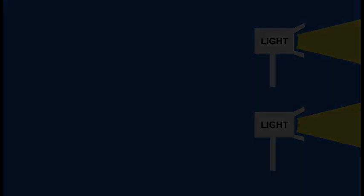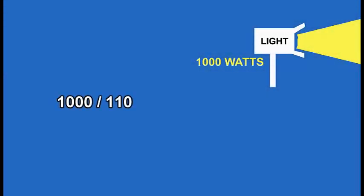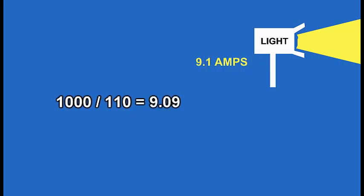Light bulbs are usually rated in watts. Amperage equals watts divided by voltage. In video production, 1,000 watt light bulbs are pretty common. So if you have a 1,000 watt light bulb, 1,000 divided by 110 volts equals roughly 9.1 amps.